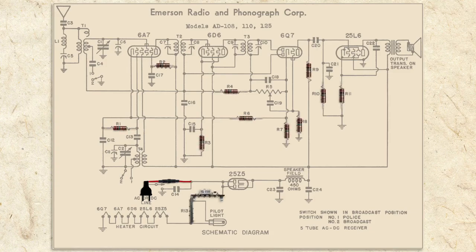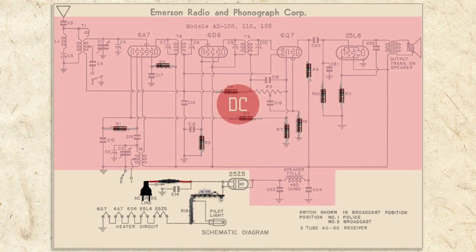We've also learned that most of the radio requires DC, and that the rectifier tube is a diode that converts AC to DC.